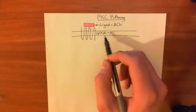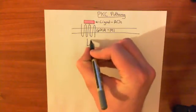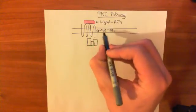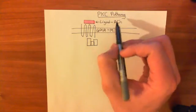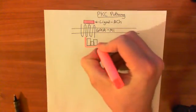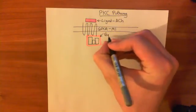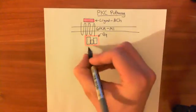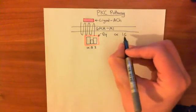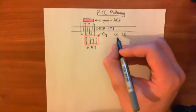This G protein coupled receptor is going to be coupled with a heterotrimeric G protein. Heterotrimeric G proteins consist of three subunits: an alpha subunit, a beta subunit, and a gamma subunit. This GPCR, which is going to activate the protein kinase C pathway, is going to be coupled with what is known as a GQ heterotrimeric G protein. The alpha subunit is going to be a specific one of the 16 possibilities — there are 16 genes all coding for slightly different alpha subunits, and they all trigger different pathways.